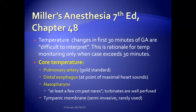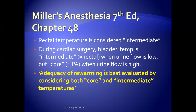The tympanic membrane is another core temperature site; however, it is usually used for scientific experiments. It requires a special temperature probe, is somewhat invasive, and is often only used in awake patients who place the sensor in the auditory canal themselves — because placing it in an unconscious patient could cause trauma. Rectal temperature is considered an intermediate temperature. Bladder temperature during cardiac surgery is intermediate when urine flow is low, but can be considered core — equal to pulmonary artery temperature — when urine flow is high.